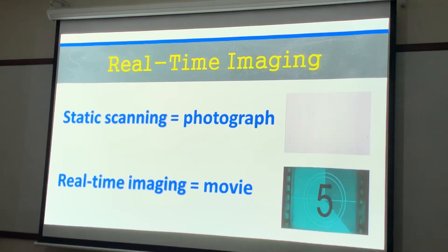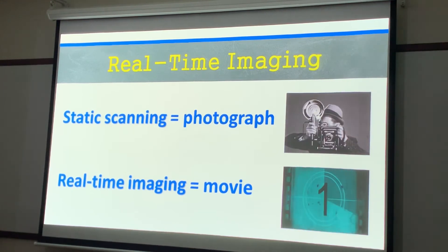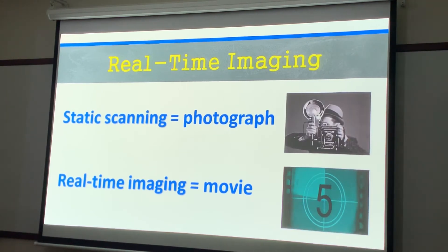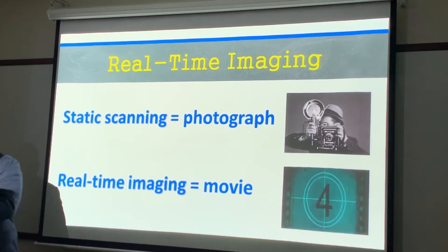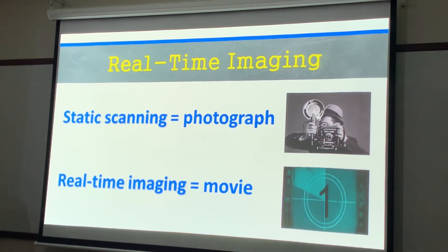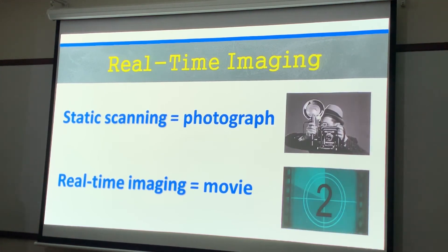Think of photography — taking a photograph is a static image, just one single image like an old Polaroid. Think of a real-time image as creating a movie. When you use CineLoop, for instance if a person has gallstones and you want to see them moving, you press CineLoop so the doctor can see those gallstones rolling toward the fundus of the gallbladder. Static scan is a photograph; real-time imaging is movement.